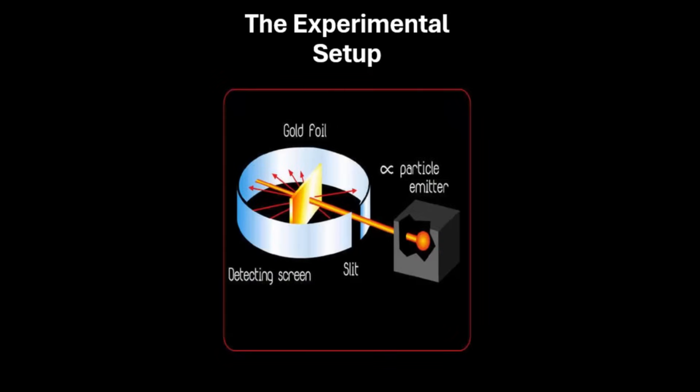The experimental setup for Rutherford's alpha scattering experiment involved firing alpha particles, which are positively charged particles, at a thin sheet of gold foil. The gold foil was chosen to be made incredibly thin, just a few atoms thick. This foil is placed in the center of the apparatus.